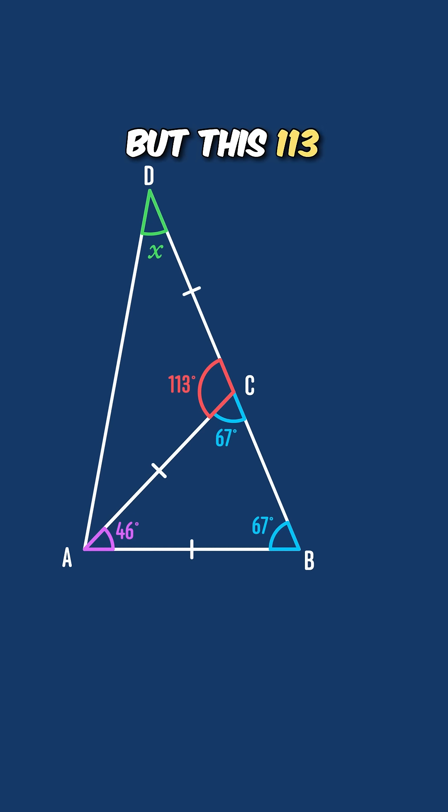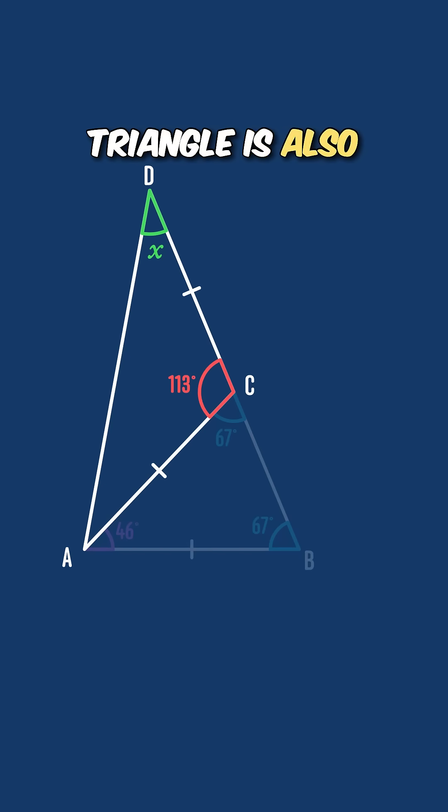But this 113 degree angle is the apex angle, i.e. that non-base angle of the second isosceles triangle ACD. Since this new triangle is also isosceles, its two base angles must both be equal to that angle we're looking for, x.